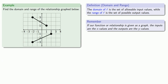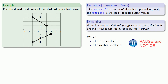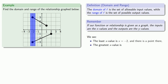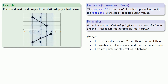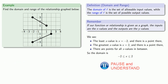Or take a look at this graph. We see the least x value occurs here at x = −2. Moving to the right, the greatest x value occurs here at x = 2, and there are points for all x values in between. So our domain is −2 ≤ x ≤ 2, or in interval notation, x is in [−2, 2].